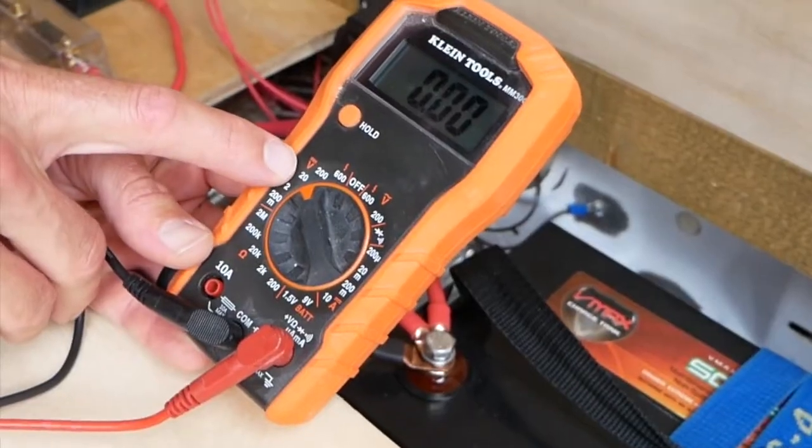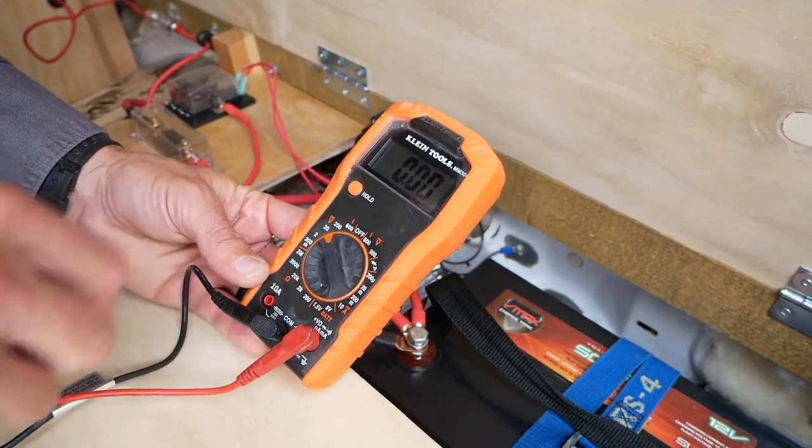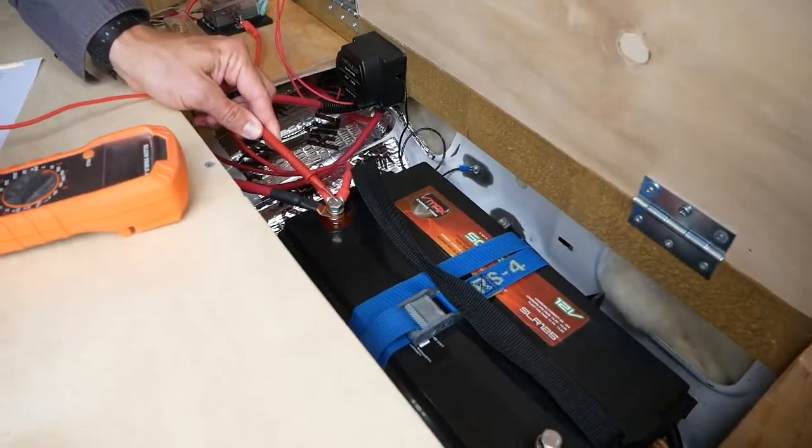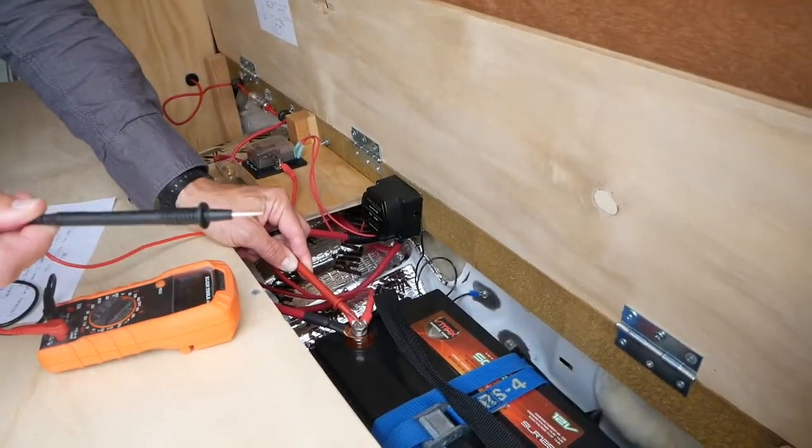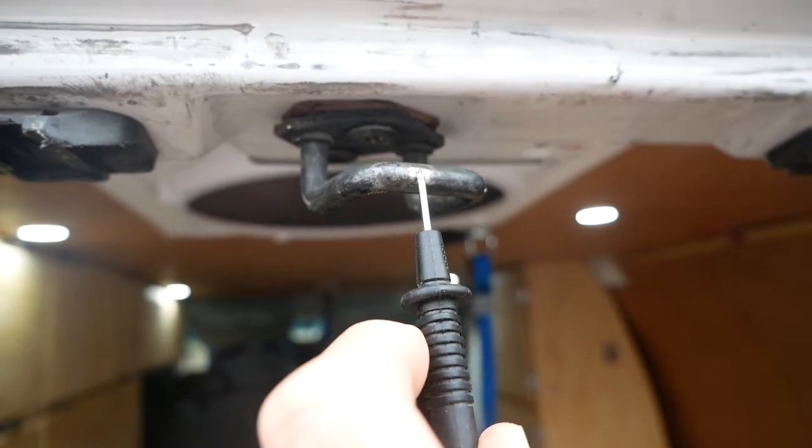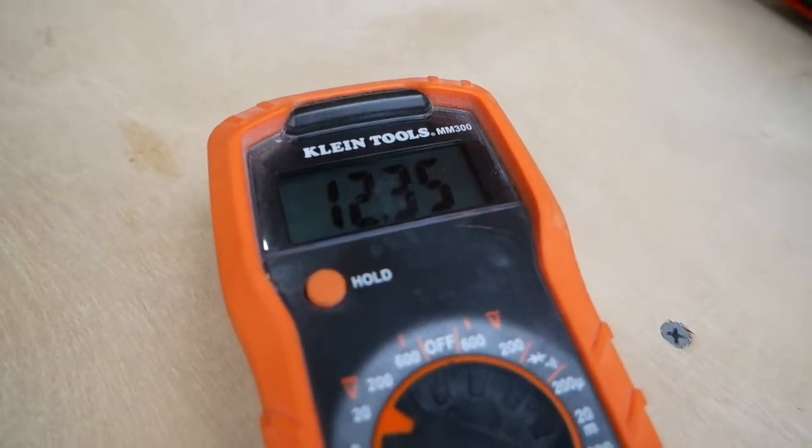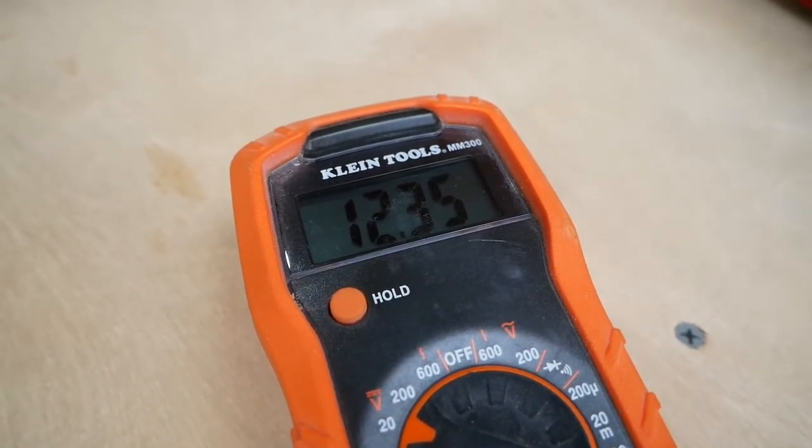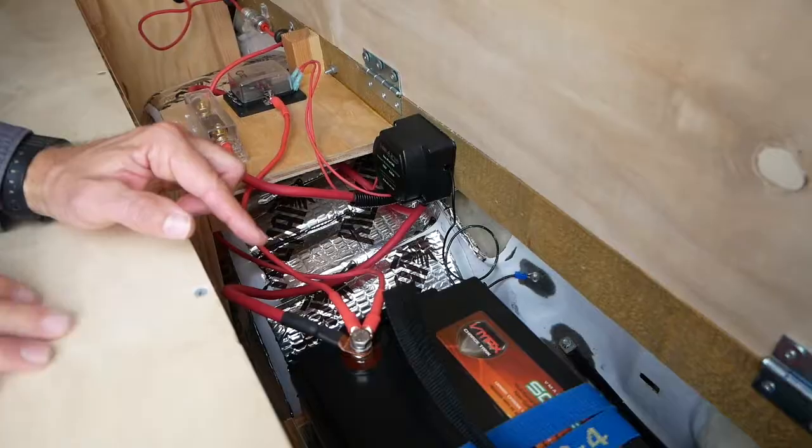You'd set your multimeter to DC current, which is that symbol right there, versus AC current. Then you would just touch the positive post with one of the probes and you'd take the negative one and find somewhere kind of far away from the battery to make sure that you're getting a good connection to the metal frame in the car. So I found a spot of bare metal that's far away from the battery, put the negative on there and the positive is on the battery terminal. Right now we're reading just a little over 12 volts, so we know we're getting a good connection with that negative terminal.